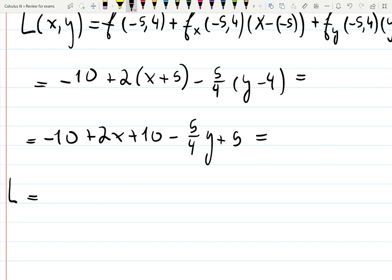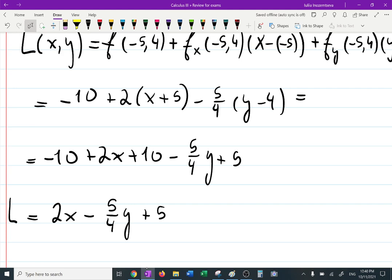Collect the terms. L will be, that's the final answer, 2x minus 5 quarters y plus 5. I think it should be... which is going to be plus 5, because 10 and -10 goes away, so it's just plus 5 at the very end. This is the answer.